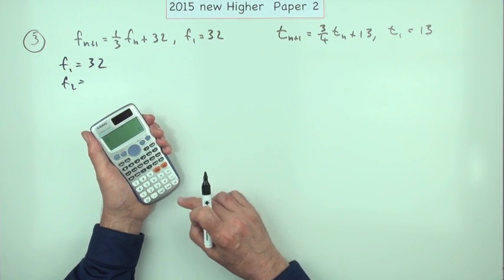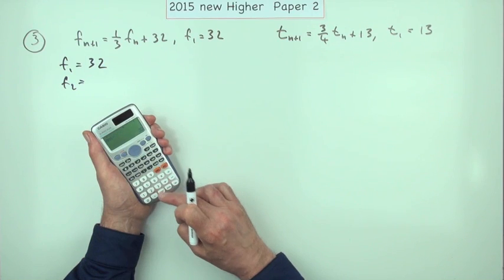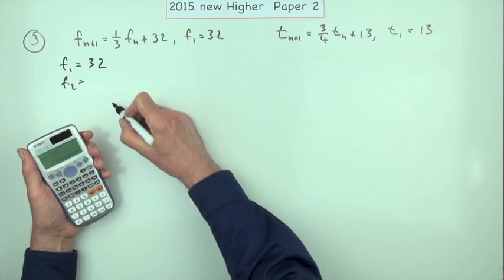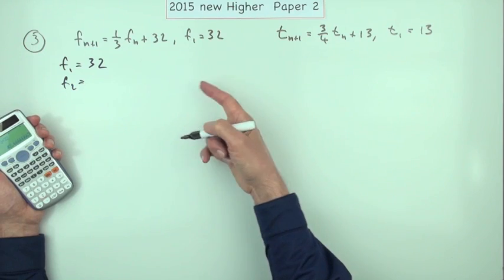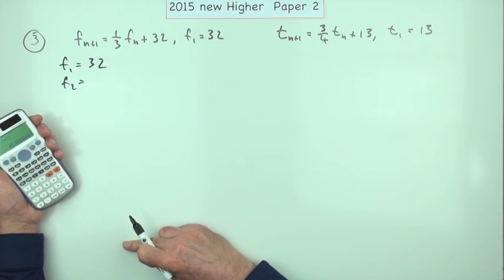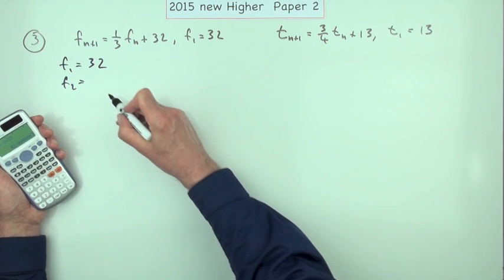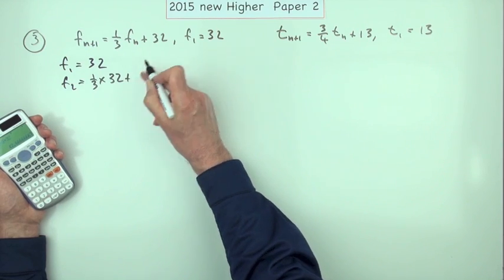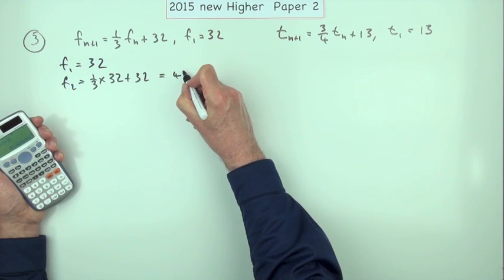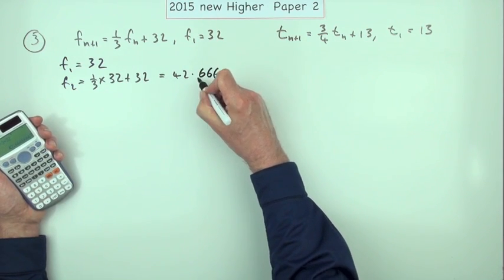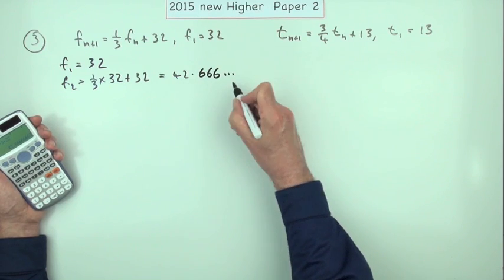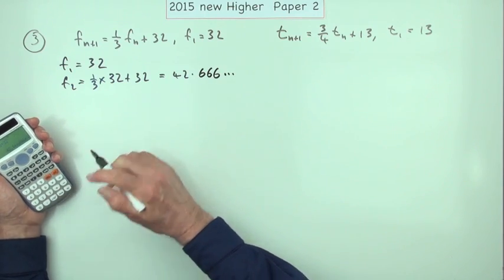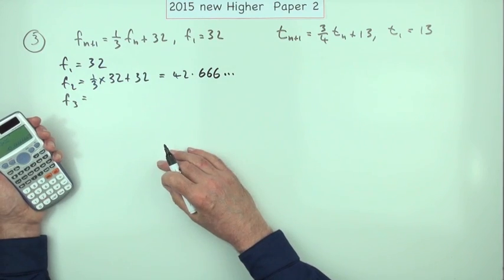32, pop it in. Answer divided by 3 plus 32. It just gives it as a decimal straight away, which is what I want. The standard for going through a recurrence process is show the calculation on the first line: 1/3 of 32 plus the 32. I'm just going to put the first three decimal places but not round them off by showing that it continues. Then thereafter just press the button and put the rest down.